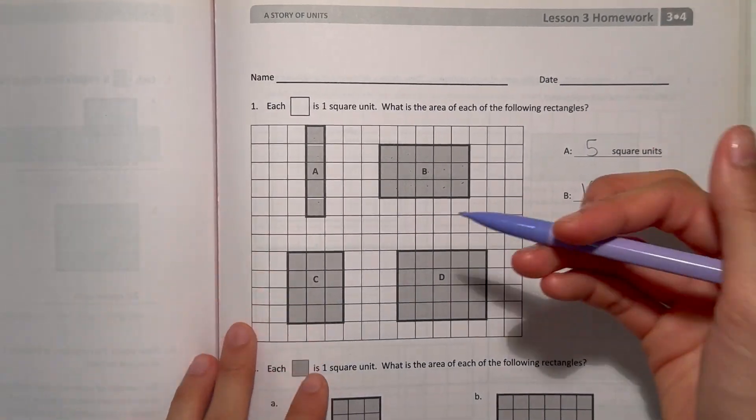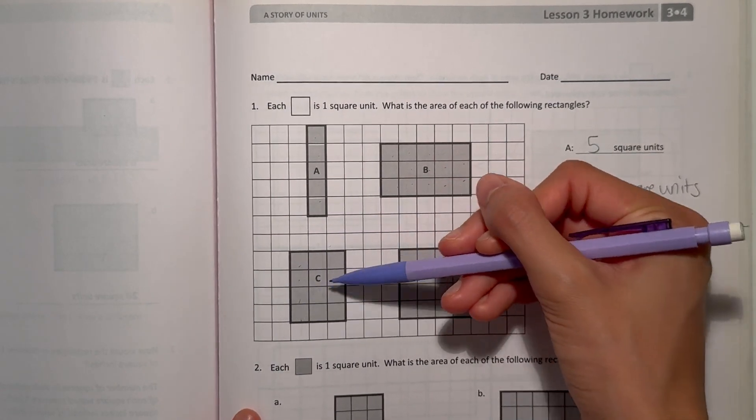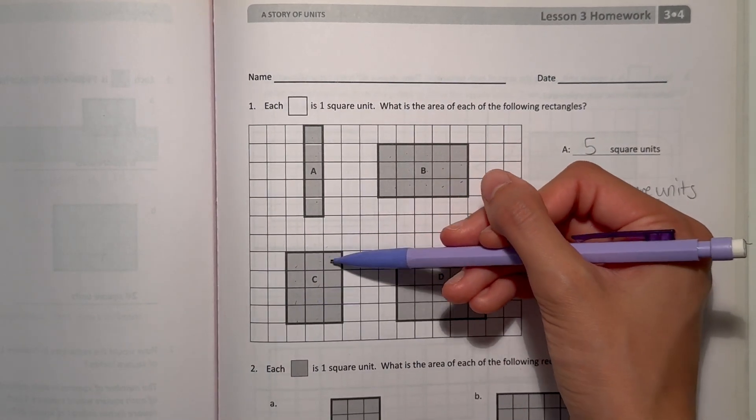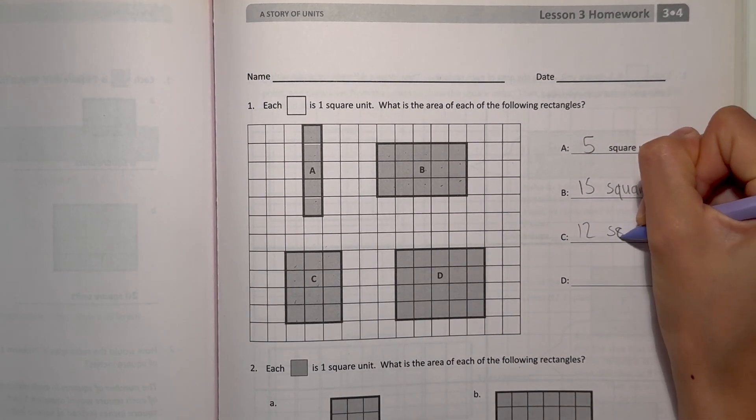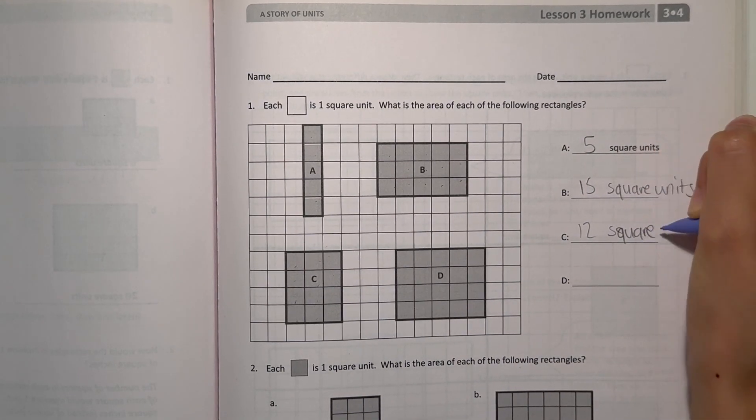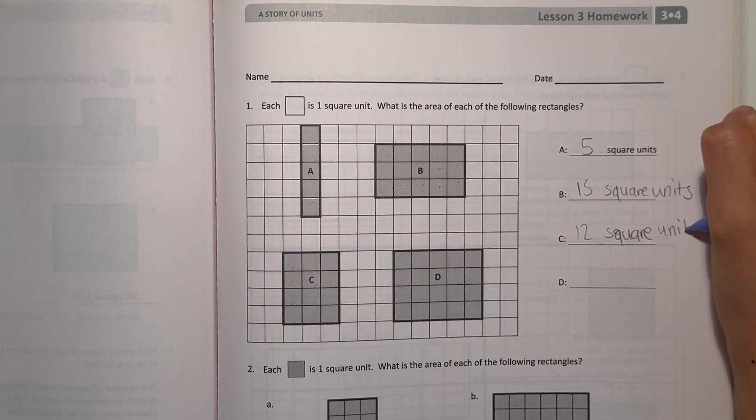C, we have 1, 2, 3, 4, 5, 6, 7, 8, 9, 10, 11, 12. So that's 12 square units. And again here, we're just counting how many squares take up the shape.